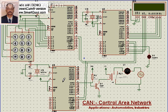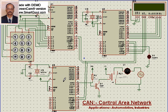Today, CAN is very largely used in cars. More than 30 microcontrollers are used in cars for exchanging information between themselves. We will see later how this application works in a car.